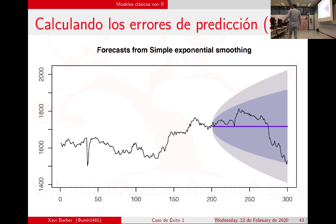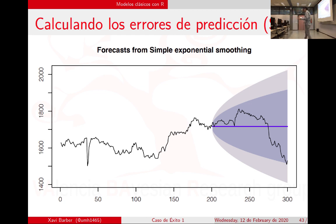Ya sabéis el famoso chiste sobre los estadísticos del pollo y la pizza: entra el pizzero a una reunión donde hay dos personas, y cuando sale le preguntan qué se han comido. Uno se ha comido toda la pizza y el otro no ha comido nada, pero el estadístico dice que en media se han comido media pizza cada uno. Lo mismo ocurre con el intervalo de confianza: es simétrico por un lado y por otro. El intervalo de confianza ya de por sí es el penal.